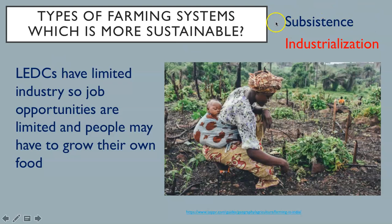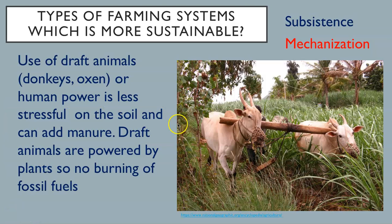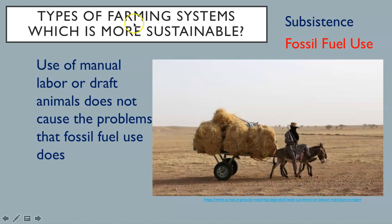Commercial, large-scale farming tends to rely on heavy machinery, which can damage the soil and uses fossil fuels. Subsistence farming uses draft animals, like donkeys or oxen, or human power, which is less stressful on the soil and can add manure to fertilize it. Draft animals are powered by plants, so there is no burning of fossil fuels. Commercial farming uses a heavy dependence on fossil fuels, which uses finite resources and produces large amounts of pollution. Whereas in subsistence farming, the use of manual labor or draft animals does not cause the problems that fossil fuel use does.